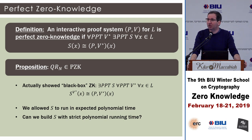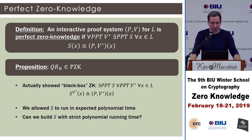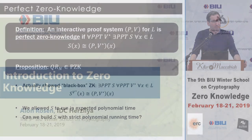The definition of malicious-verifier zero knowledge — also called perfect zero knowledge — states: an interactive proof is perfect zero knowledge if for any PPT V*, there exists a simulator S such that for any x in the language, the distribution of S(x) is identical to the distribution of the view of V* in the real interaction. We showed something stronger: one simulator works for all verifiers — this is called black-box zero knowledge. Also note the simulator runs in expected polynomial time; with exponentially small probability it could run longer. Tomorrow we'll see an amazing protocol where the simulator runs in strict polynomial time.